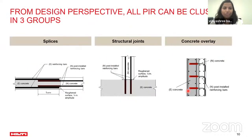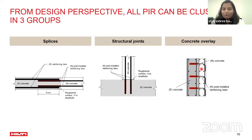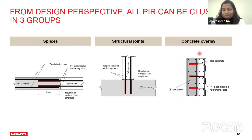From a design perspective, all post-installed rebar applications can be clustered into three groups: splice connections, structural joints, and concrete overlay. Splices involve lapping or lap splice configuration, where a new rebar adjacent to the existing rebar transfers tensile forces through the chemical and concrete. Structural joints may or may not have overlapping bars. Today we are focusing on splices and structural joint configurations, as these are the focus of the design methodologies being discussed.